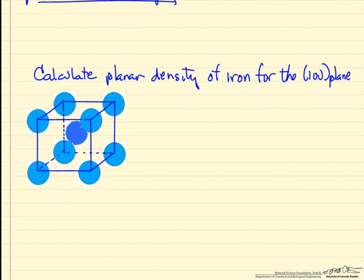The second part of the problem is to calculate the planar density for the (100) plane. So if I look at the x-axis again in this direction, then the plane we're talking about is this plane here. Intercept x is 1, it does not intercept the y and z axes. And we want the number of atoms per area, so we look at this plane.